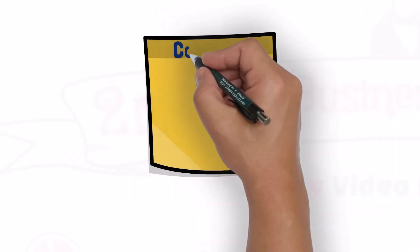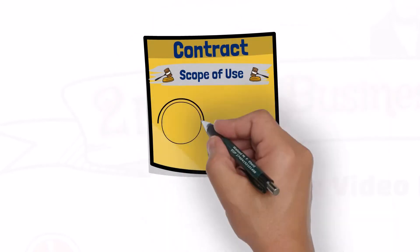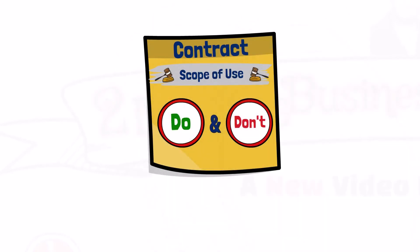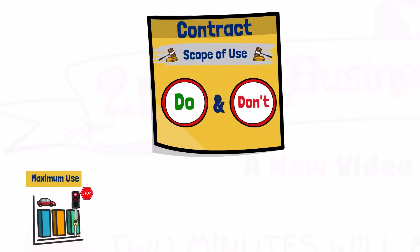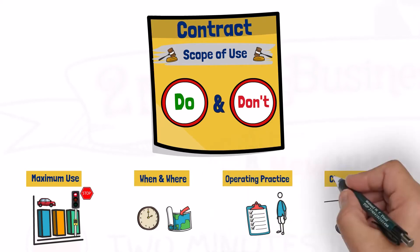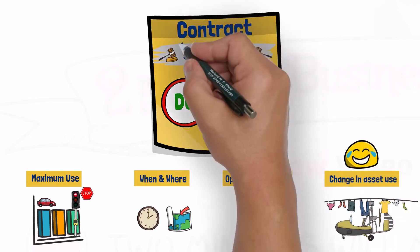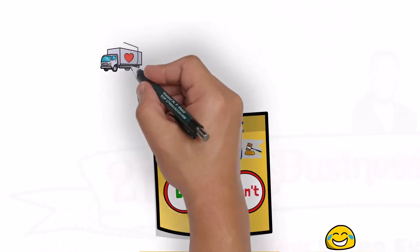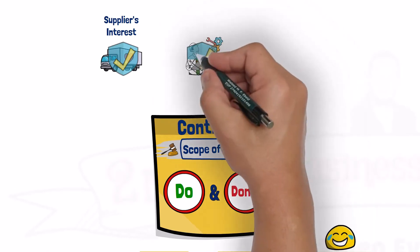In some contracts, you might find that the supplier has included a scope of using the asset that the customer is required to adhere to. A defined scope of use may, for example, specify the maximum amount of use of an asset, or may impose a limitation on where and when the customer can use the asset, or may require the customer to follow a particular operating practice, or may require the customer to inform the supplier of any changes in how an asset will be used. Suppliers normally include such scope definitions to protect their interest in the asset or to protect their personnel who are operating the asset for the customer.